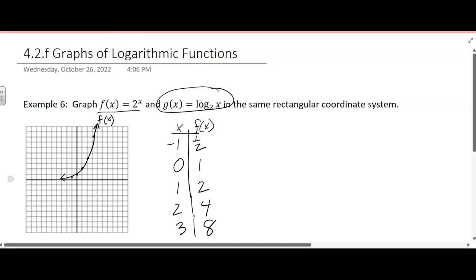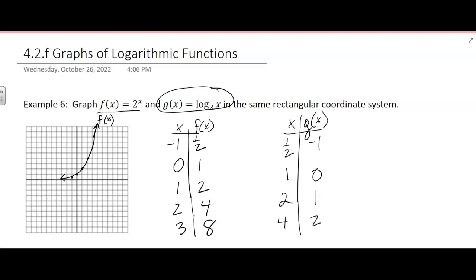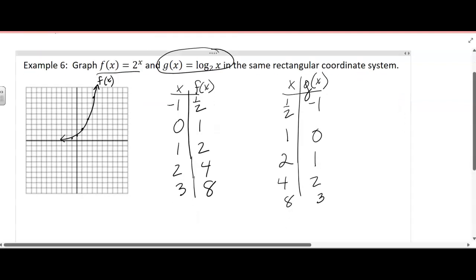g of x is going to be the inverse. So if I made a new table of values from what we know about inverses, I can switch their x and y. So now I have 1 half here and negative 1, 0, whoops, I didn't switch it, 1, 1 and 0, 2 and 1, 4 and 2, and 8 and 3. We're just switching the ordered pairs around.